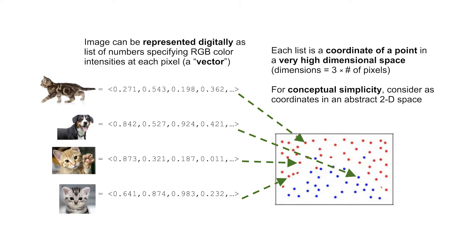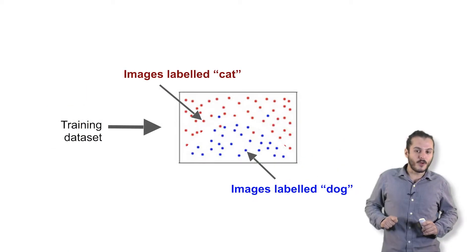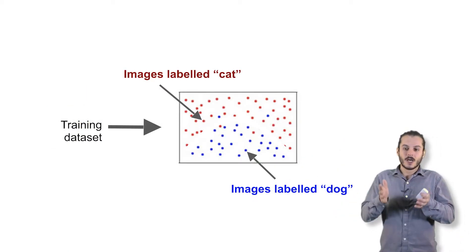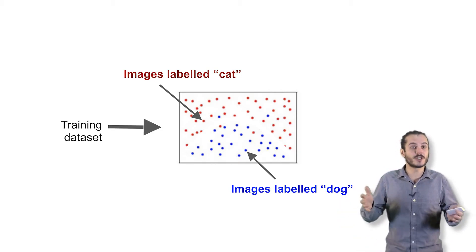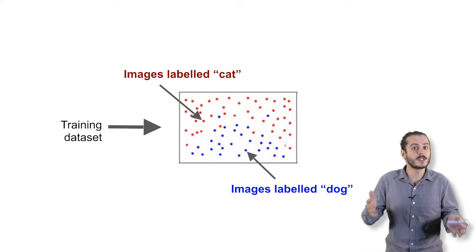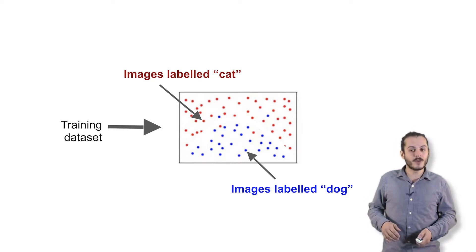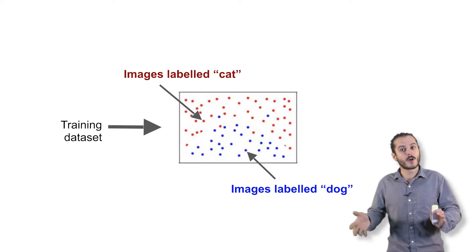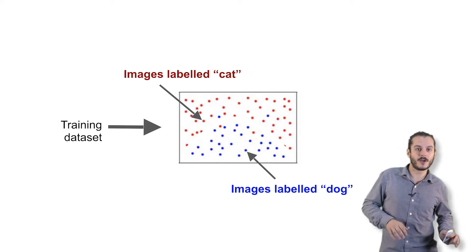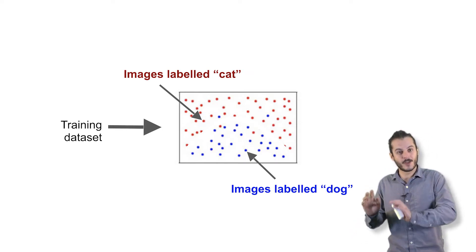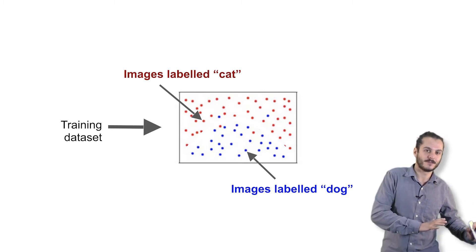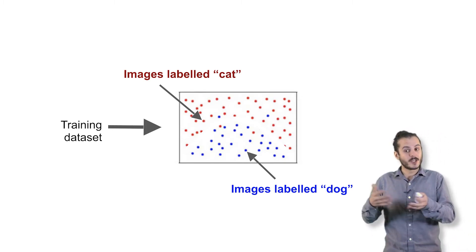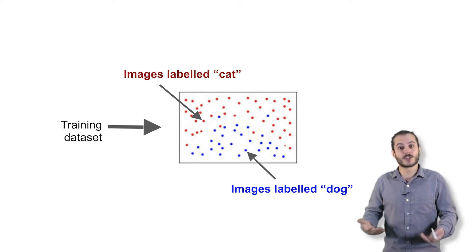In this example of the images, you're provided with a training dataset. All the images in the training dataset are just points in a space. And here, I've also colored the points according to their label, cat or dog. The red points are the cat images, and the blue points are the dog images. This is what the training dataset looks like geometrically.